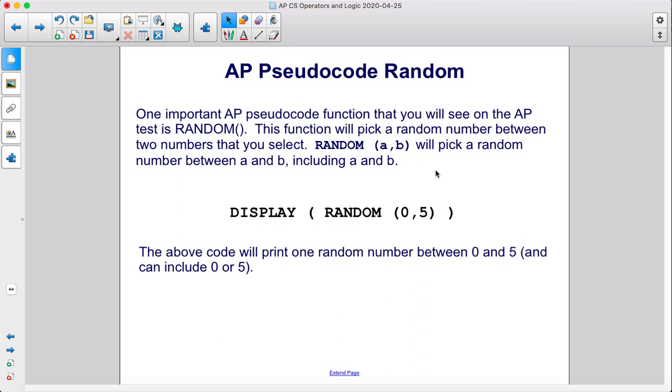Random AB will pick a random number between A and B, including A and B. Display Random 0,5, the above code will print one random number between 0 and 5, and that can include the numbers 0 and 5.